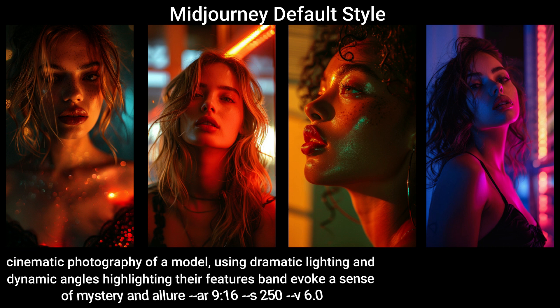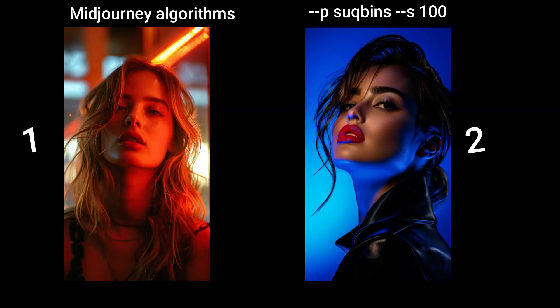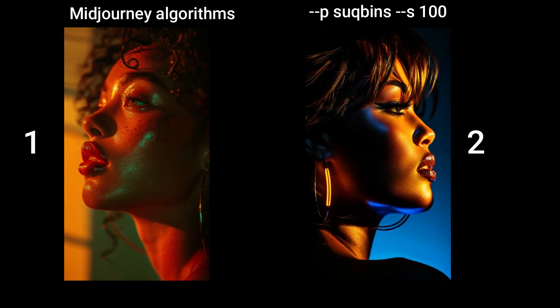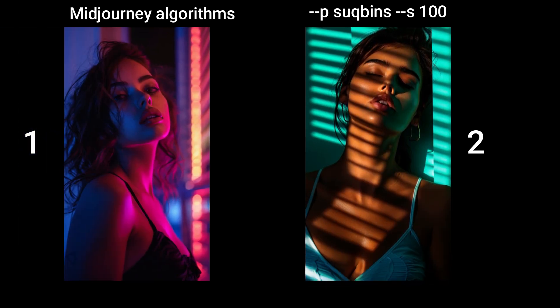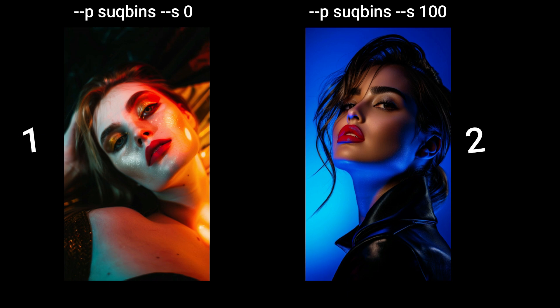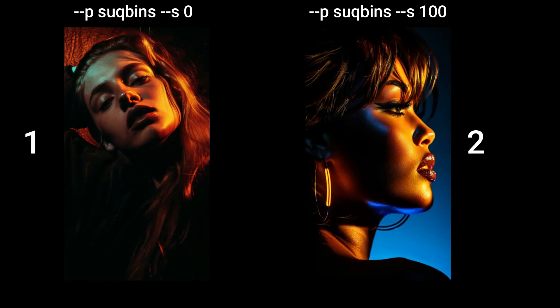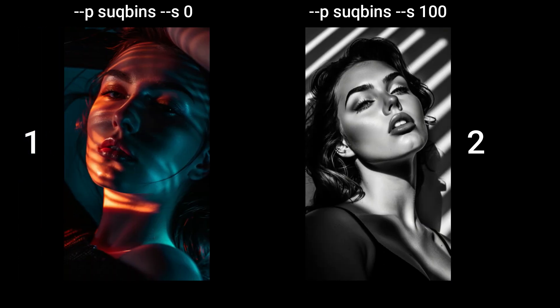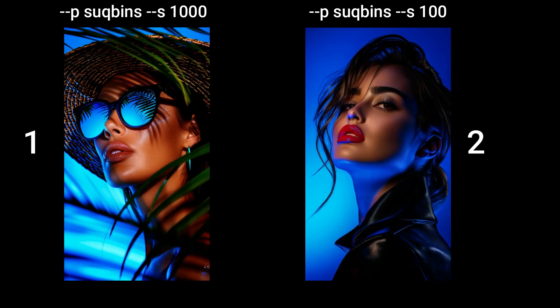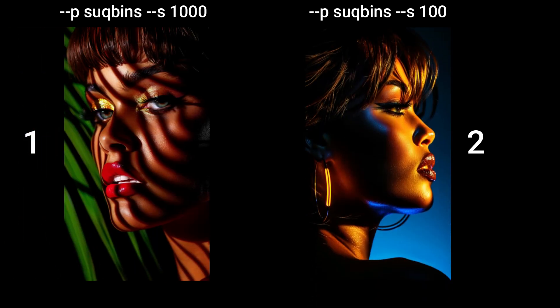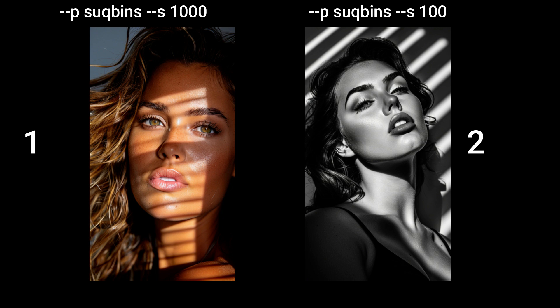These image sets demonstrate the stylization parameter in action. The first set relied solely on Midjourney's general algorithm. The second set used my personalization style '--p', with the default strength '--s 100', giving a moderate level of my personal taste. When I lower the strength to '--s 0', the outputs become more generic and don't look influenced by my style even with '--p' active. At maximum '--s 1000', the images are heavily influenced by my personal style.